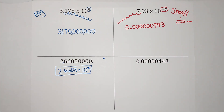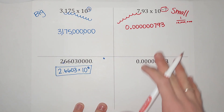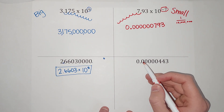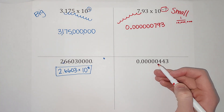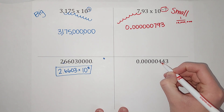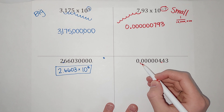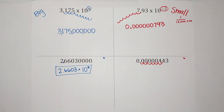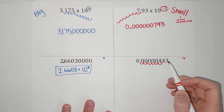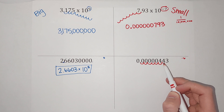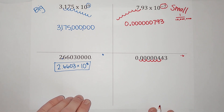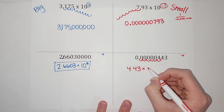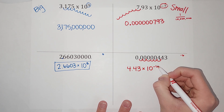Now let's take a really small number in standard notation and convert it into scientific notation. Again, we want one number in front of our decimal place — one number that's not a zero. So we want the decimal point right here. How many places am I moving over? One, two, three, four, five, six places. I'll write a six, and remember it's a really small number so it's going to be negative six, because when I go from scientific notation to standard I move to the left. So in scientific notation: 4.43 times 10 to the negative sixth power.